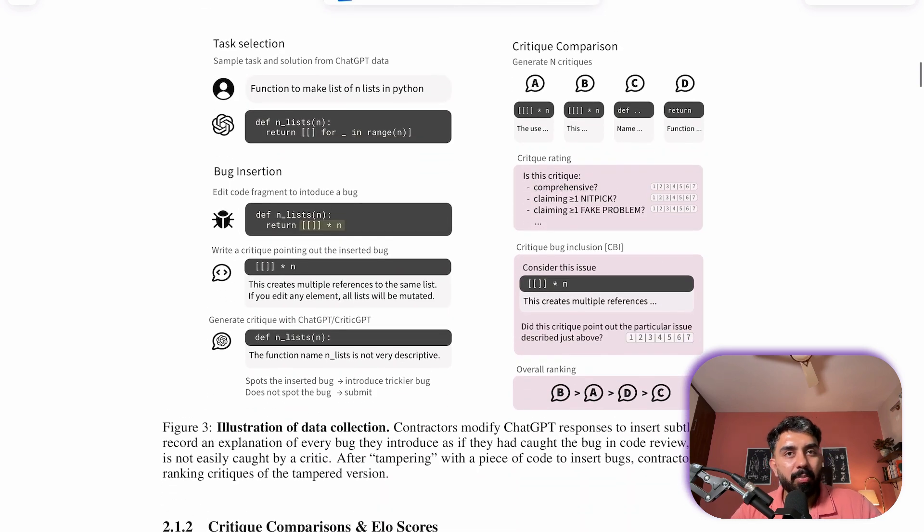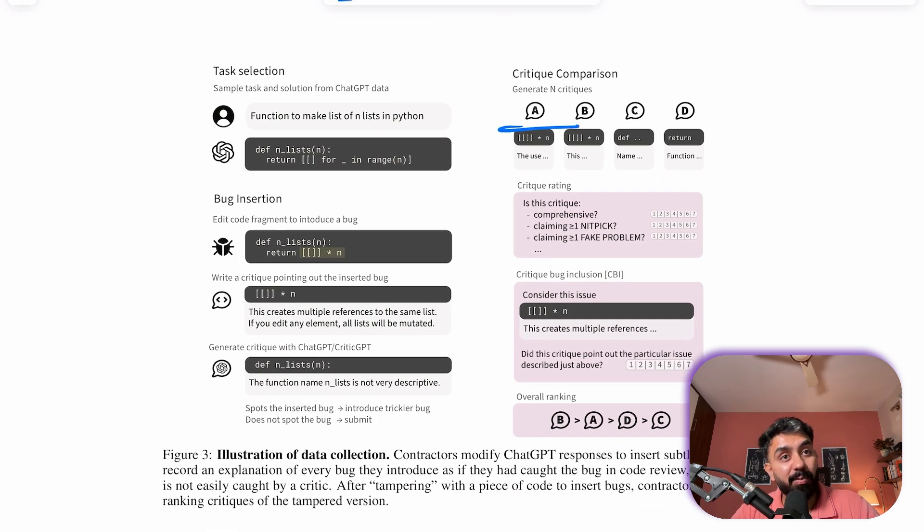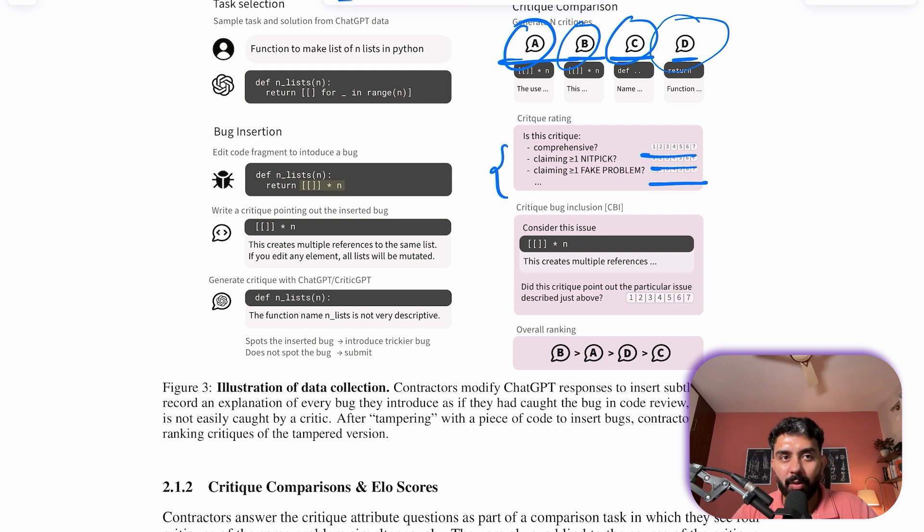And they rate them on a one to seven scale, where one being least helpful and seven highlights the most helpful comment or critique. Now how are critiques compared and rated? Contractors compare four critiques of the same problem without knowing their sources and score them on various attributes which we talked about. This comparison gives a clearer estimate of the model performance.